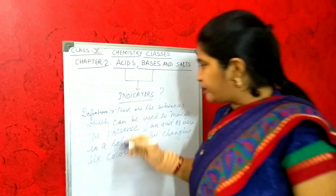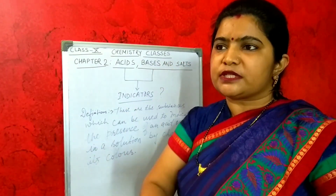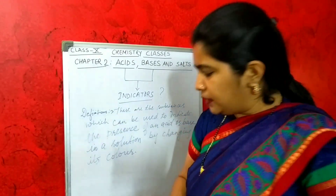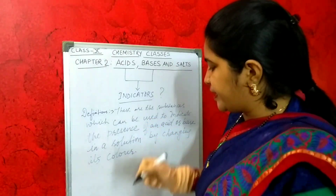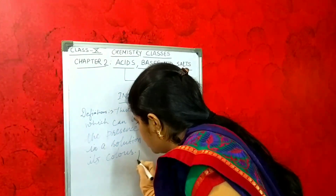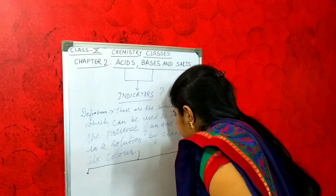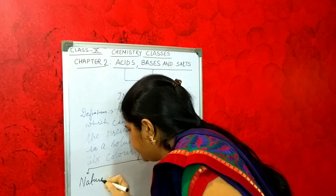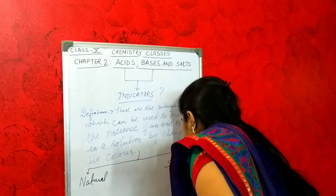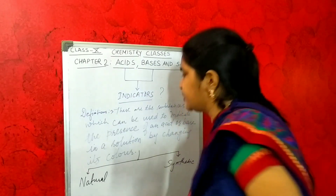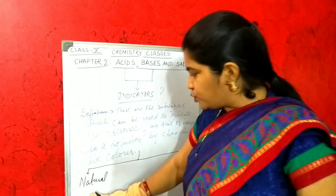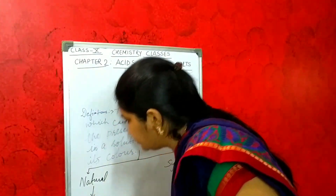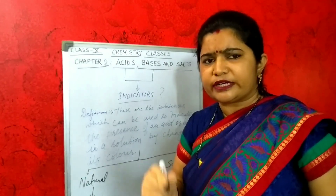By changing color you can identify which substance is an acid and which is a base. Indicators are further divided into two types: first is natural, and another one is synthetic.